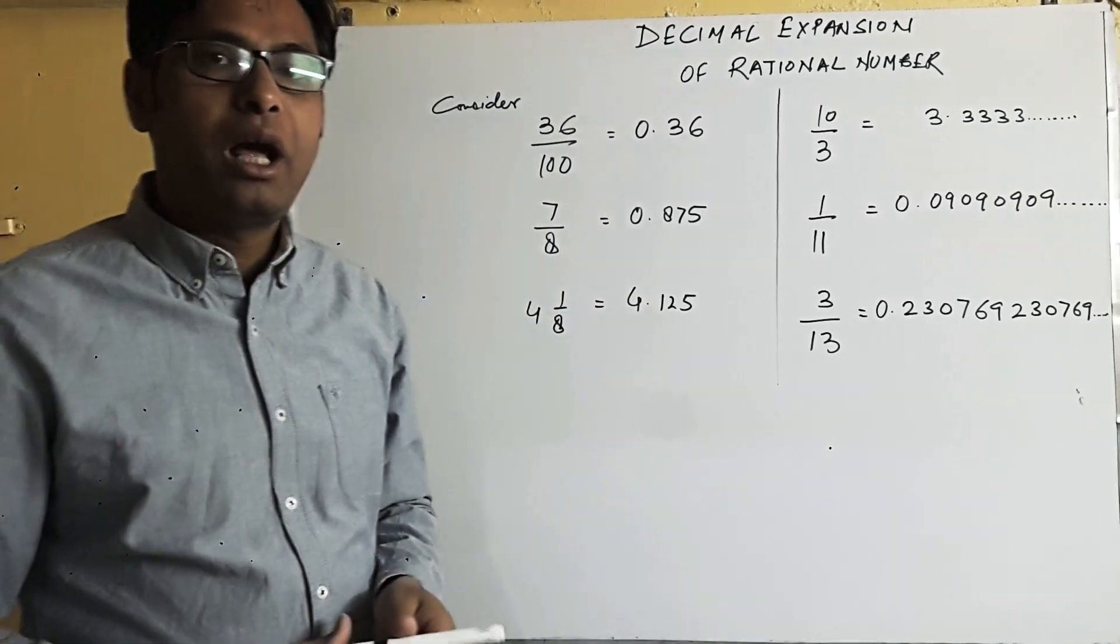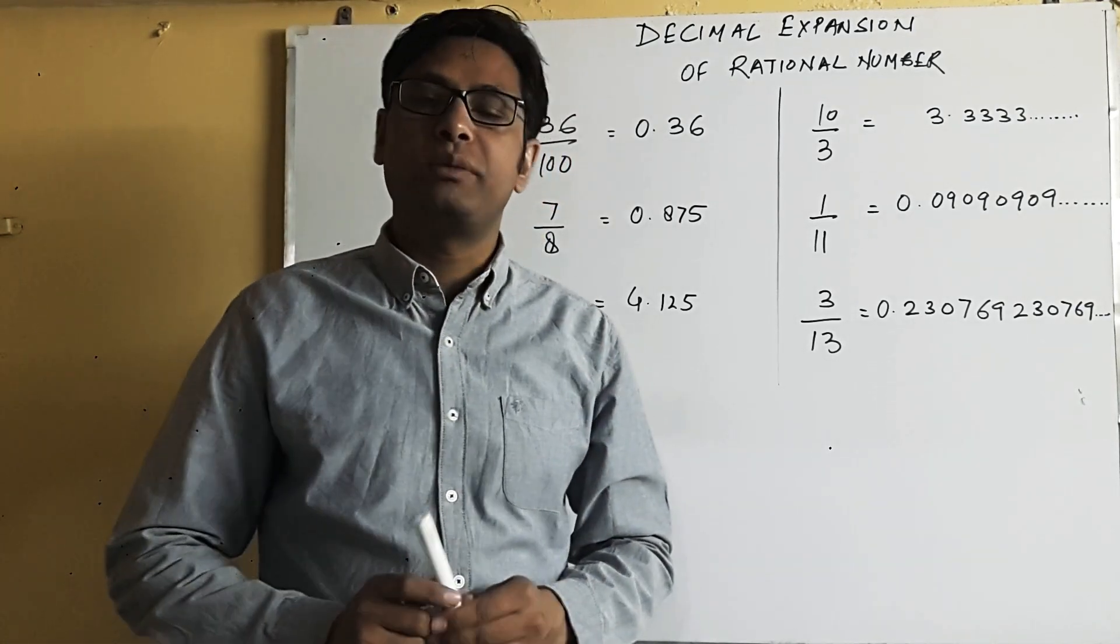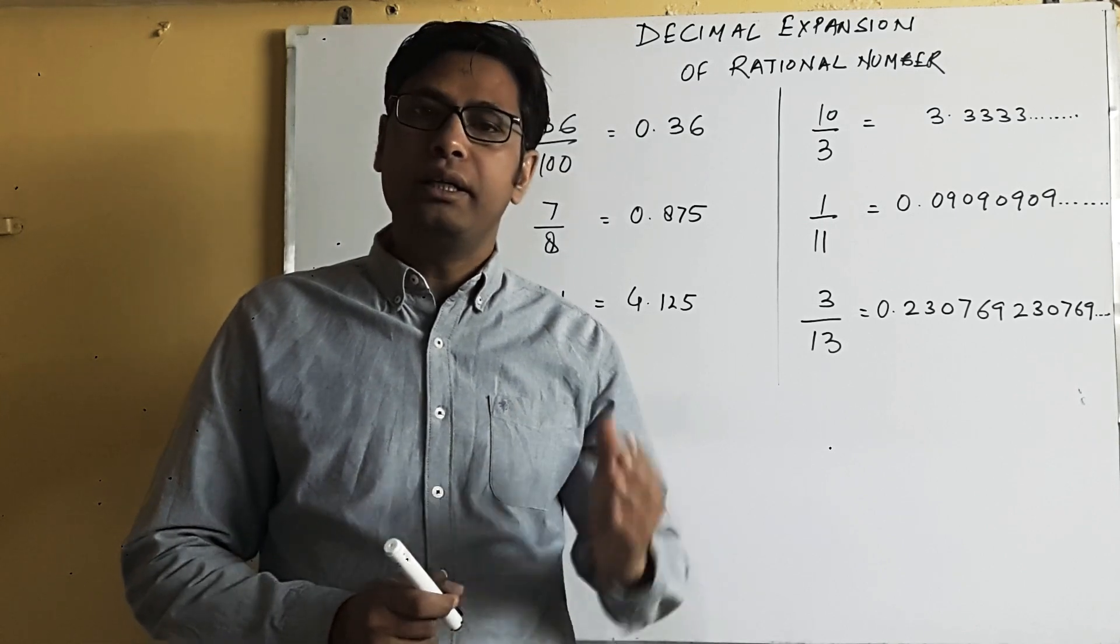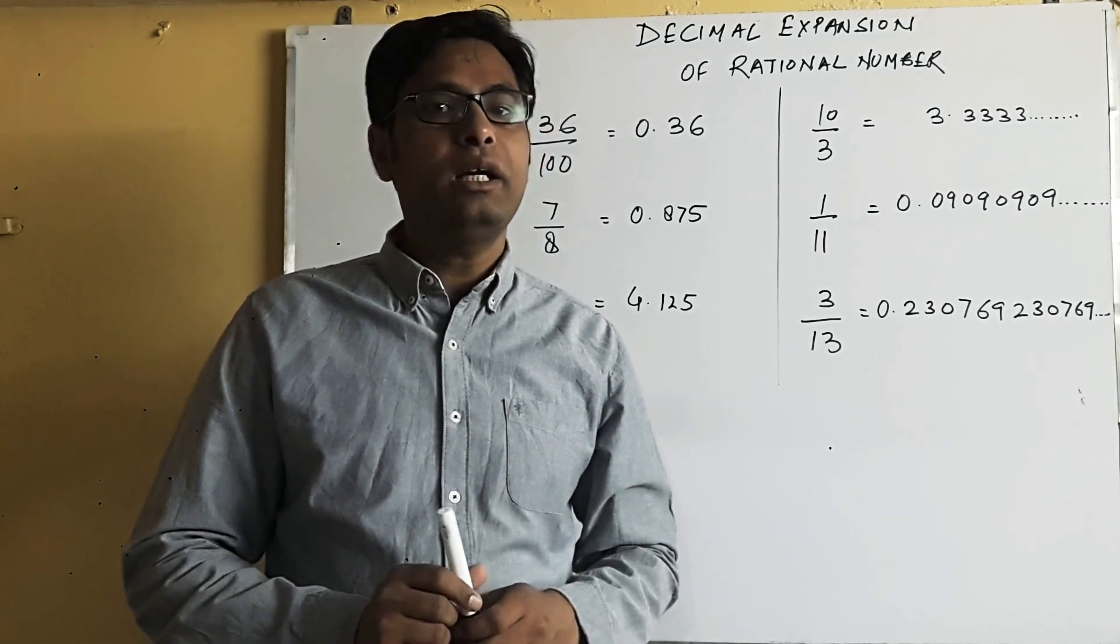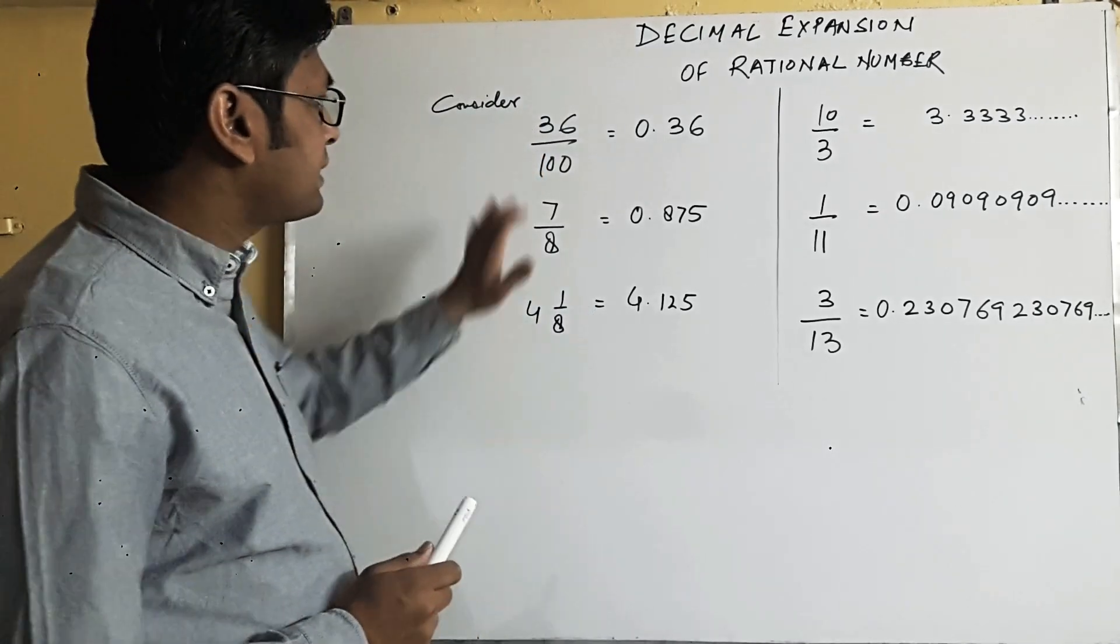Rational numbers are categorized into two types of decimal expansion. One is terminating and the other is non-terminating repeating. Let's take some examples.